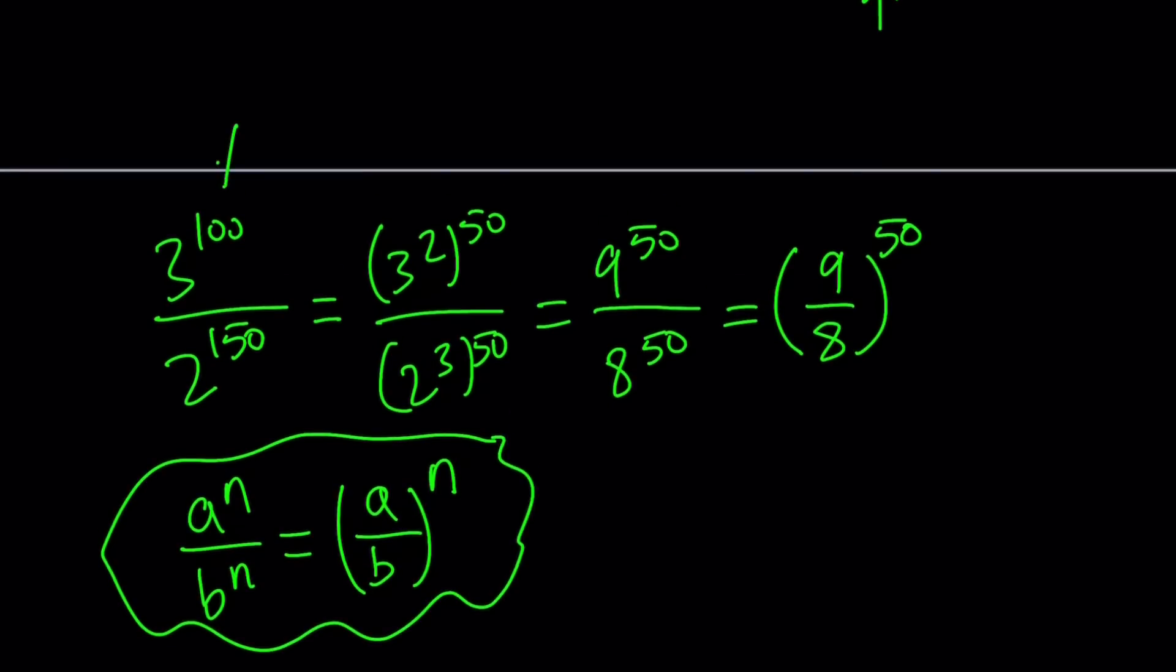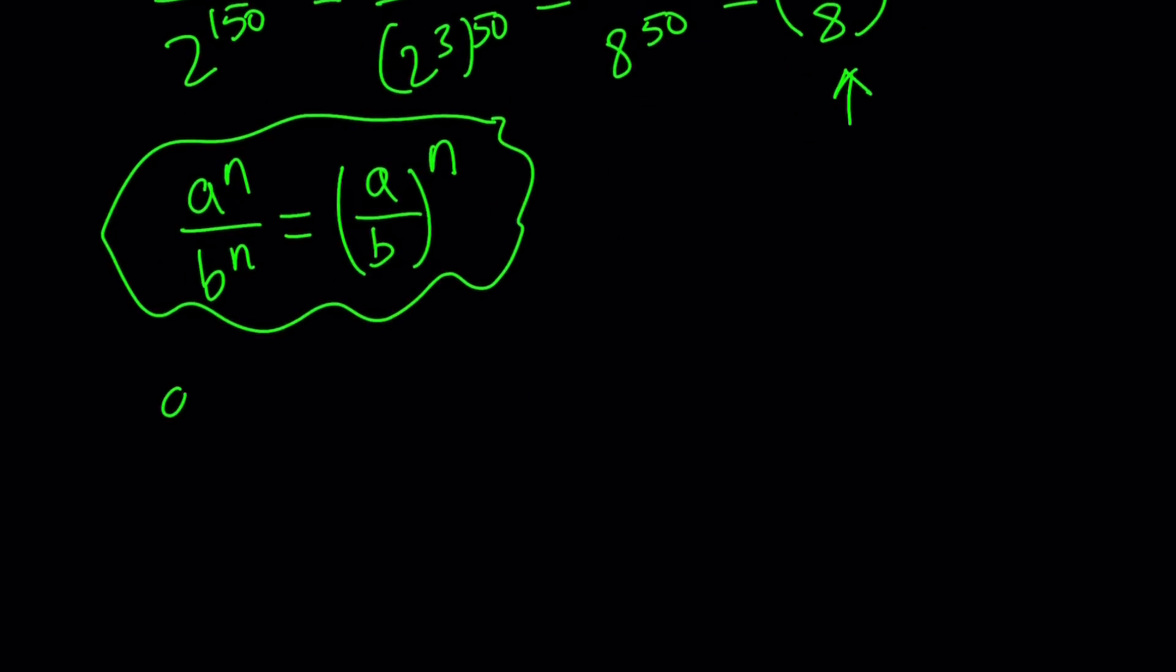So here we used a property of exponents that can be written as a to the power n divided by b to the power n can be written as the power of a over b, the nth power of a over b. So that's the property we basically used here. Now, why did we do that? Because as is, these two powers are really hard to compare.